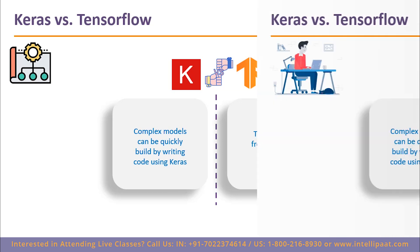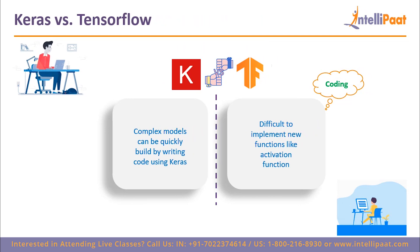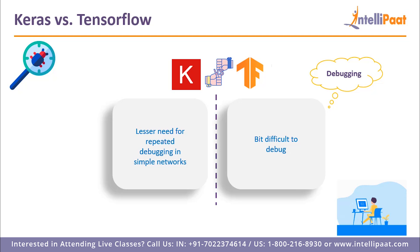The next parameter is coding: Keras is easier to code as it is written in Python, whereas TensorFlow is written in both Python and C++, making it difficult to implement custom functions like activation functions. The another factor is debugging: since Keras deals with simple networks, there are fewer errors and less need for repeated debugging. In TensorFlow, as it deals with complex neural networks, there are chances of more errors, making debugging quite difficult. However, since a recent update, TensorFlow comes with an inbuilt debugger which can debug during training as well as while generating graphs.